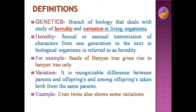After heredity, we have to see what variation is. Variation means a recognizable difference between parents and offspring, and among offspring taken from the same parents. Though there is transmission of characters from parents to their children, not all characters are expressed in offspring exactly as they are — they will show some recognizable differences.